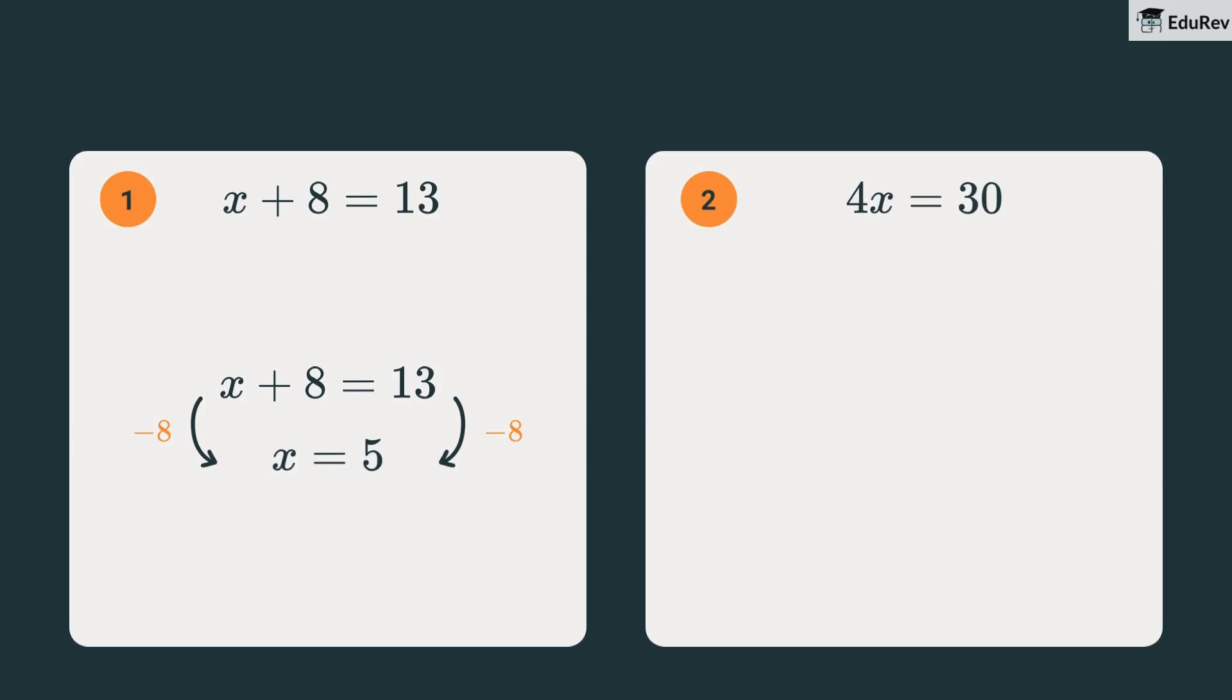Similarly, in another equation, we divide both sides by 4, and we get x is equals to 7.5.